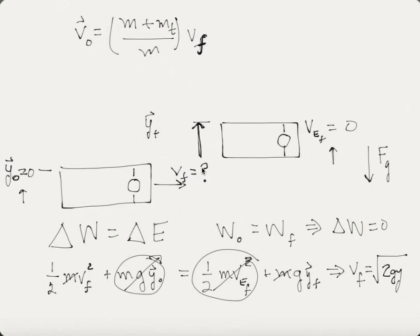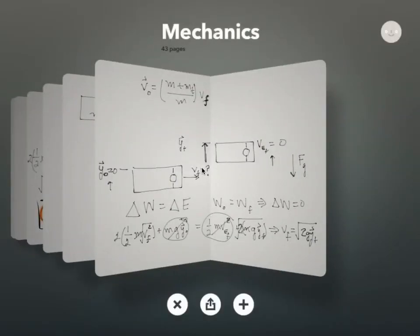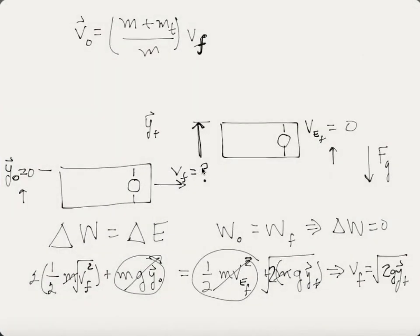All I did was multiply both sides by two, then take the square root to get that result for the final velocity. Now we take that final velocity and substitute it back into our momentum equation up here.